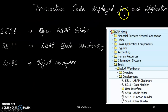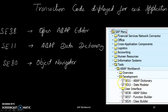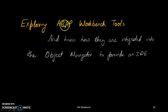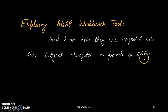Transaction codes are displayed for each application — for example SE38, SE11, SE80. You don't need to memorize them; you can go to the SAP menu under Tools and see SE11 listed there. You can enable or disable the display of transaction codes. The ABAP Dictionary transaction is SE11. As you practice, you will understand all of this — exploring the ABAP workbench tools and how they are integrated into the Object Navigator to provide an IDE.